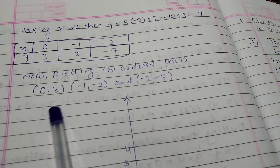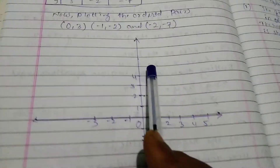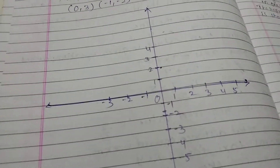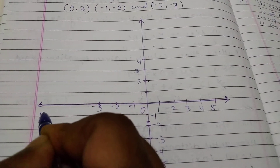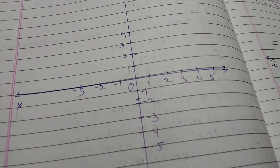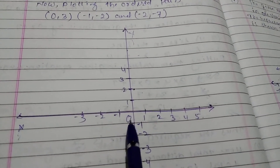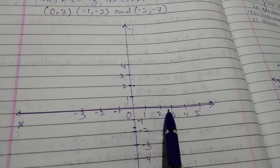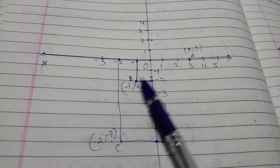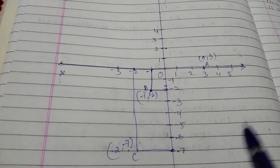Now plotting the ordered pairs (0, 3), (-1, -2), and (-2, -7) on the graph. Mark the x-axis and y-axis. Plot each point from the table and join them together to draw the straight line. This is how the graph of the taxi fare equation y = 5x + 3 is drawn.